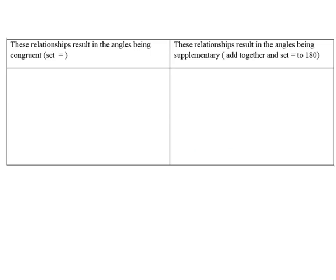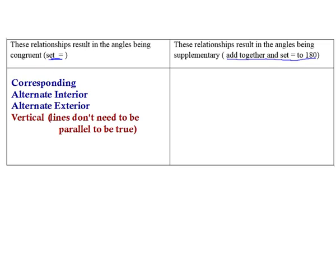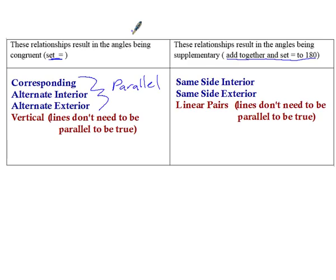Here's a condensed summary. There are essentially two scenarios: you either set the two angles equal to each other, or you add them and set equal to 180. Set equal for: corresponding, alternate interior, alternate exterior, or vertical angles. Note that vertical angles don't require parallel lines, but the others do. Set equal to 180 for: same side interiors, same side exteriors (parallel lines required), and linear pairs (parallel lines not required).